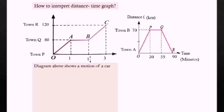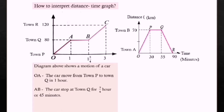For the first diagram, the diagram shows the motion of a car. In segment OA, the car moves from town P to town Q in one hour. In segment AB, the car stopped at town Q for 3/4 of an hour, or 45 minutes. In segment BC, the car continued the journey from town Q to town R.